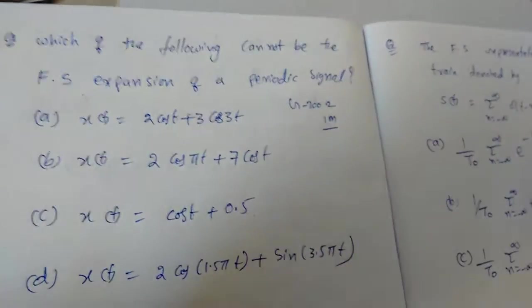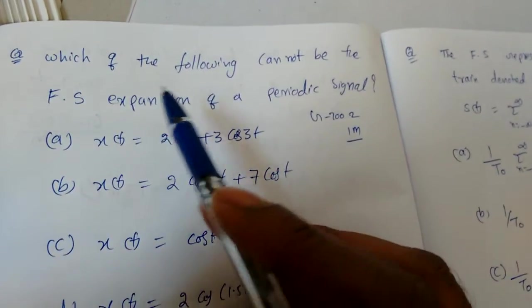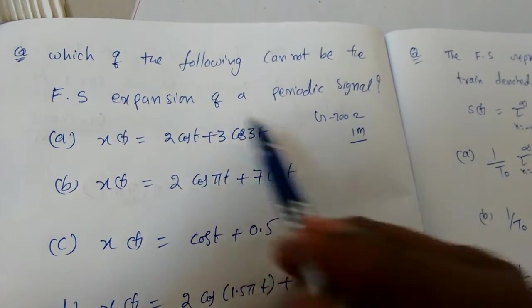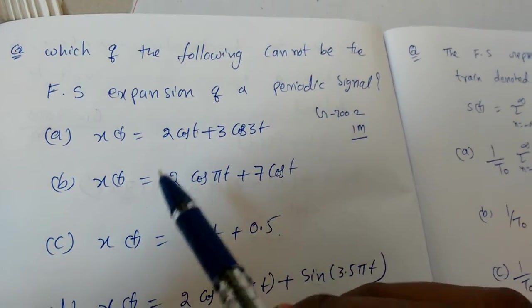In this lecture, we are going to solve a few problems on Fourier series concept. This came in GATE 2002 for one mark: which of the following cannot be the Fourier series expansion of a periodic signal?